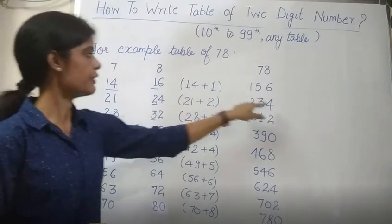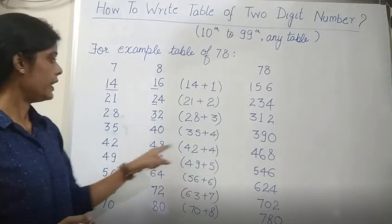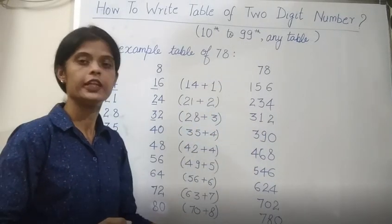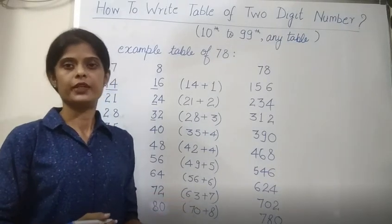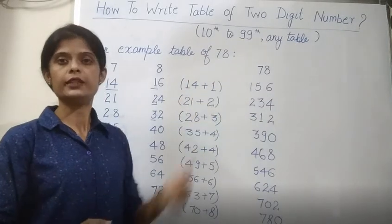We get 6, 4, 2, 0, 8. We get 78. We get 2 digit numbers. This number is 10 to 99.